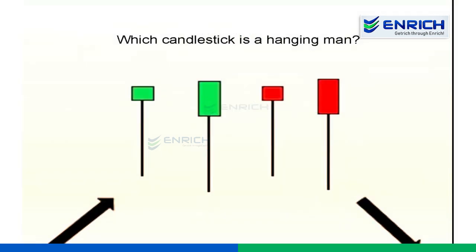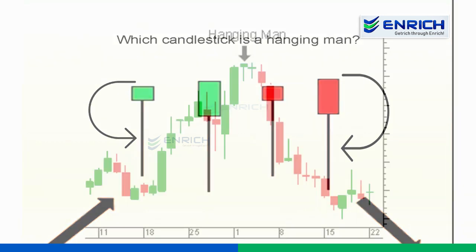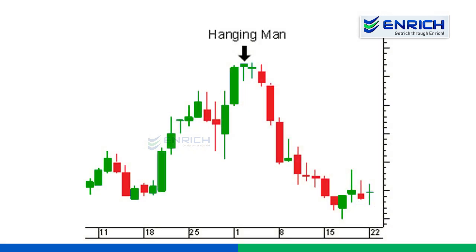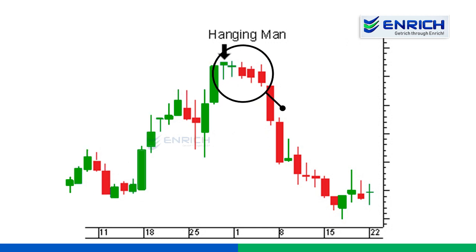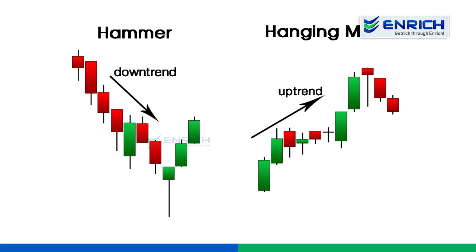So which of these are hanging man candlestick patterns? Well, all of them are hanging man. Remember, the size of the wick or the shadow must be at least two times longer than the body. What you need to remember is that a candlestick reversal pattern just shows a higher probability of a trend change, possibly to the opposite direction or sometimes to a sideways trend. The color of these candles doesn't matter — what matters is its location in the current trend.